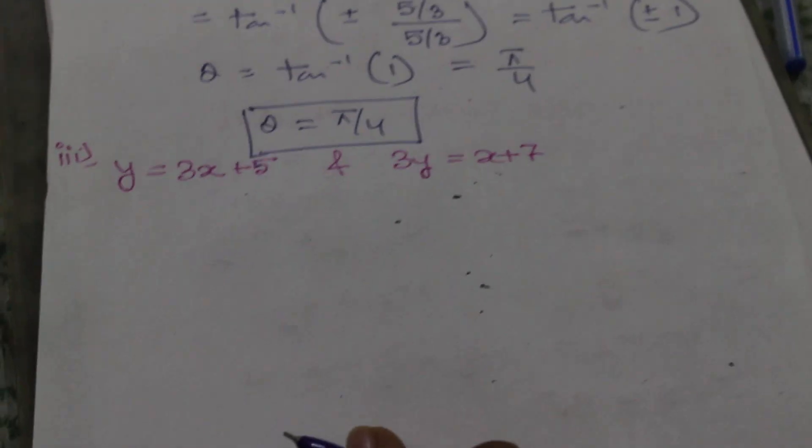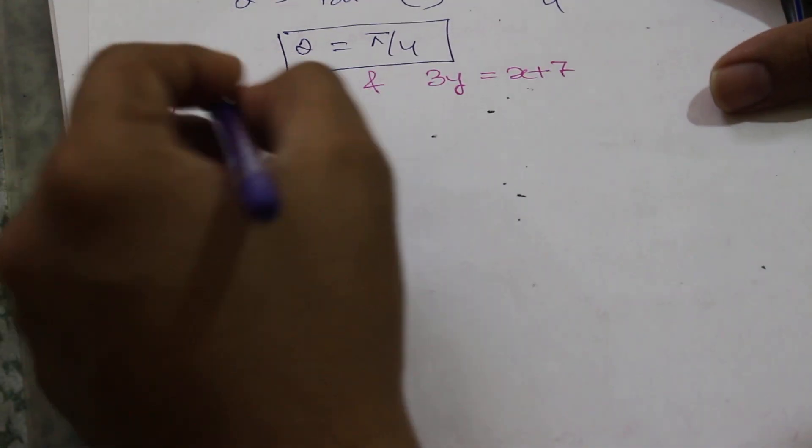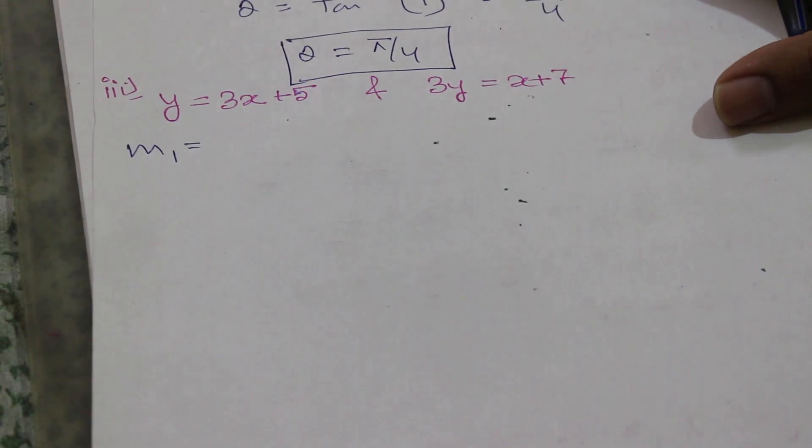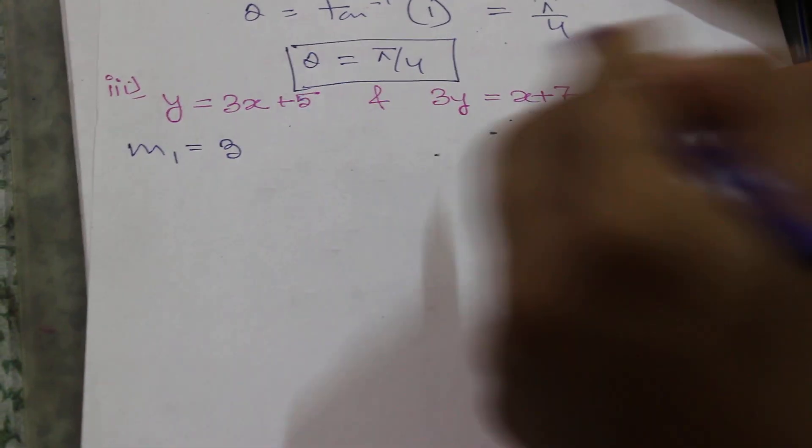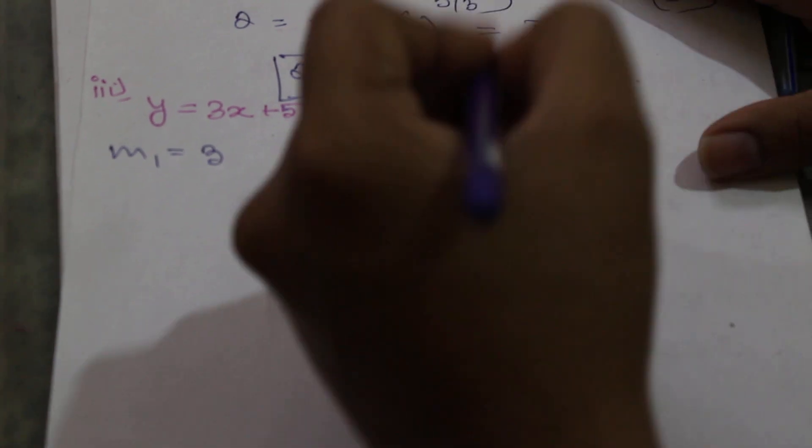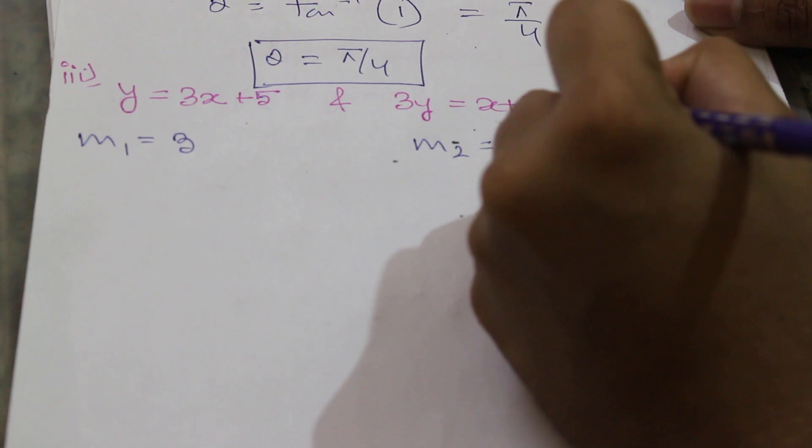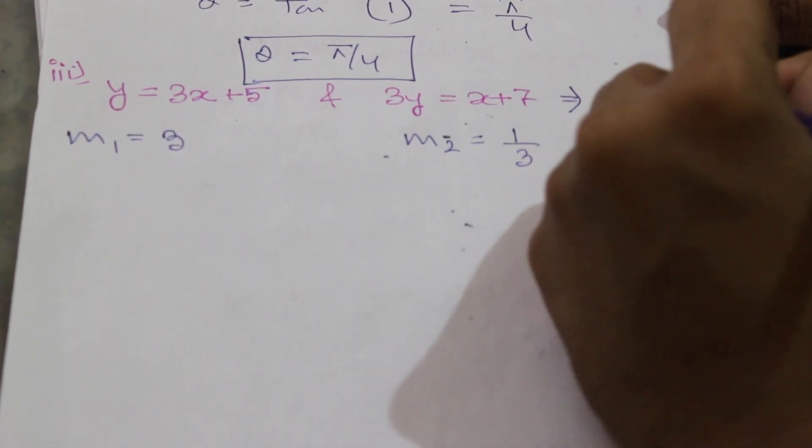Next, moving on to our last illustration. The equations are y = 3x + 5 and 3y = x + 7. We can easily calculate m1 = 3 from the first equation. From the second equation, 3y = x + 7, so y = x/3 + 7/3, giving us m2 = 1/3.